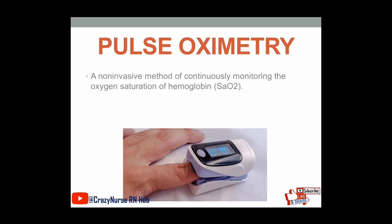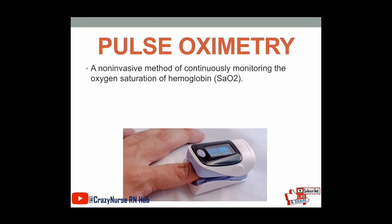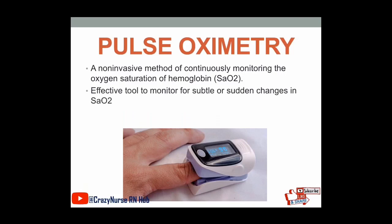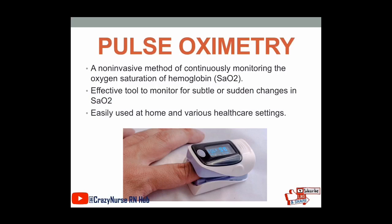Pulse oximetry is a non-invasive method of continuously monitoring the oxygen saturation of hemoglobin. It is an effective tool to monitor for subtle or sudden changes in oxygen saturation, and it is easily used at home and in various healthcare settings. The normal oxygen saturation of a patient should be 95 to 100%.